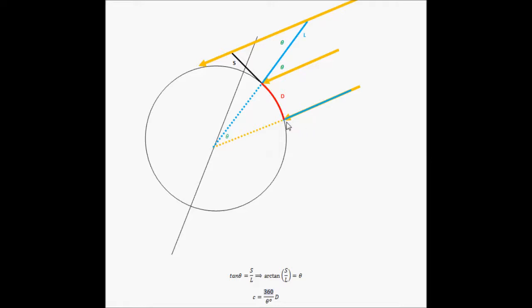So we can say that the angle theta here is going to be the same as the angle theta here, obviously, because this is between the same two lines, and it's the acute angle. This line's parallel to this line, the sun's rays, so these two angles are the same.